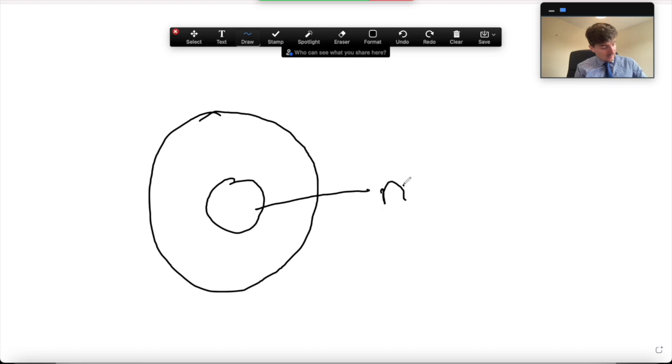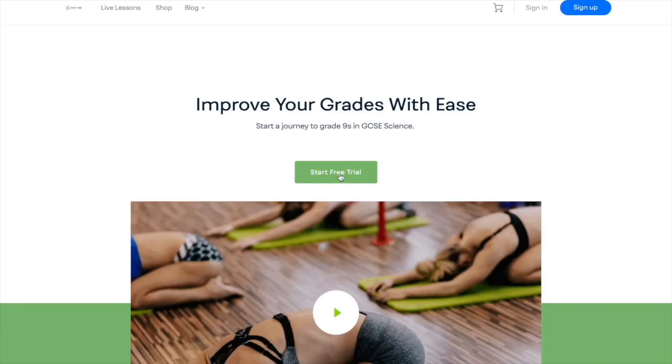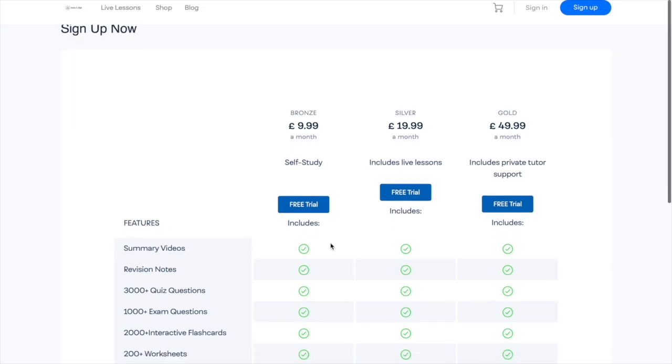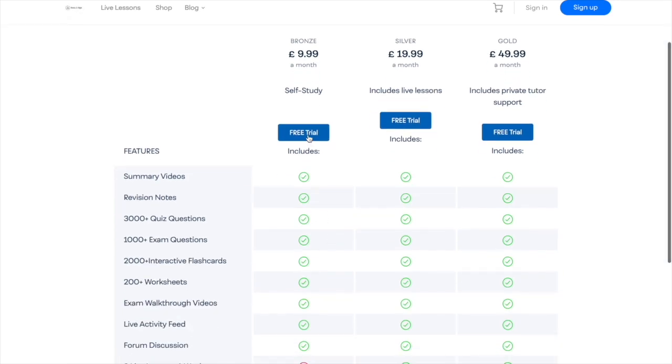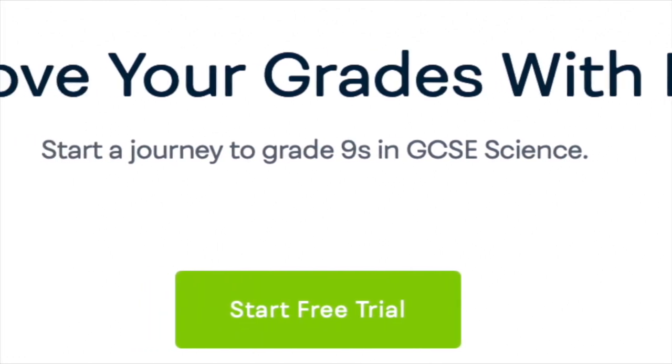This means that for an extra £10 a month, you can access at least 12 hours of lessons a month. That's under £1 an hour, which is incredibly cheap. Still not convinced? Try us completely free for seven days, and cancel any time. Completely free of charge. We offer this because we're convinced that you'll love us. So try us now.